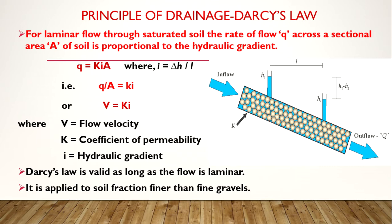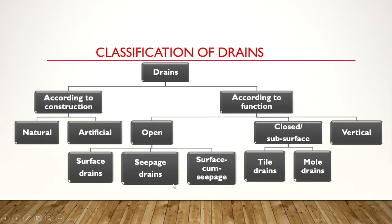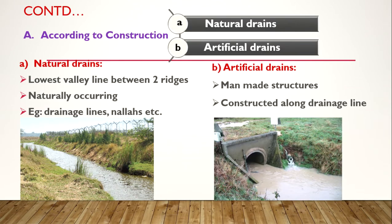Darcy's Law is valid as long as the flow is laminar and it can be applied only for soils which are finer than gravels. Now we will move on to the classification of drains. We can classify drains into two categories: one is according to construction, and the other is according to function. According to construction there are two types — natural and artificial drains. According to function there are three types — open, closed or subsurface, and vertical.